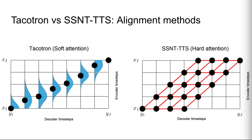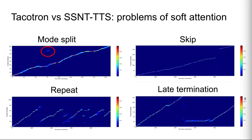SSNT-TTS considers all possible alignments during the marginalization process. But why does SSNT-TTS adopt hard alignment instead of soft attention? It is because soft attention has a big issue: fatal alignment errors. For the TTS task, alignment between source and target must be monotonic. However, because of the undesirable flexibility of soft attention, soft attention sometimes gives obvious alignment errors, as shown in these pictures.